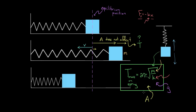To recap: the period of a mass on a spring does not depend on amplitude — changing the amplitude does not affect how long a full cycle takes. This holds for both horizontal and vertical configurations. The period also does not depend on gravitational acceleration, so taking the same mass and spring to Mars or the moon would give the same period. The period does depend on mass — bigger mass means more inertia and a longer period — and on spring constant — a bigger k means more force and a shorter period.